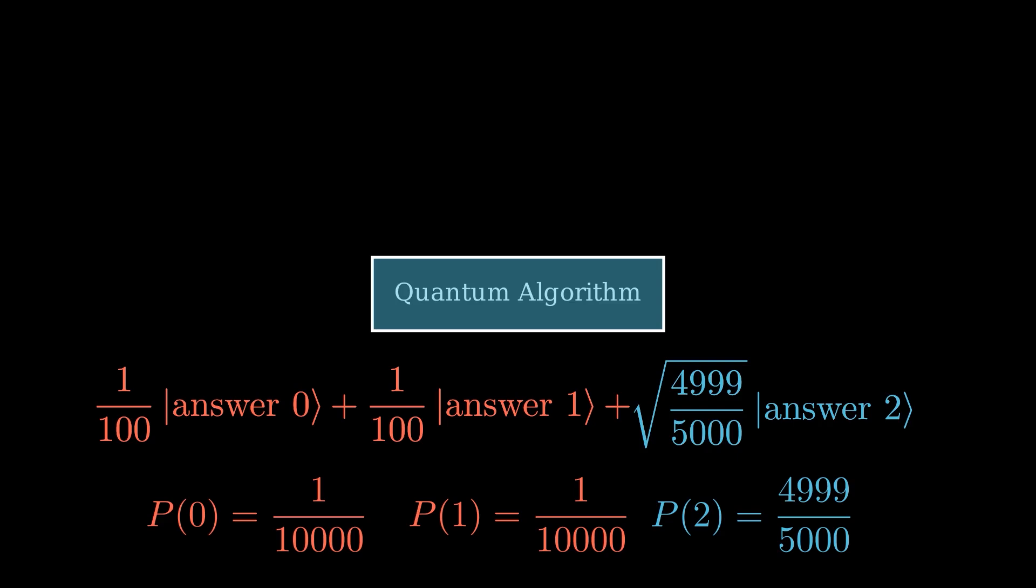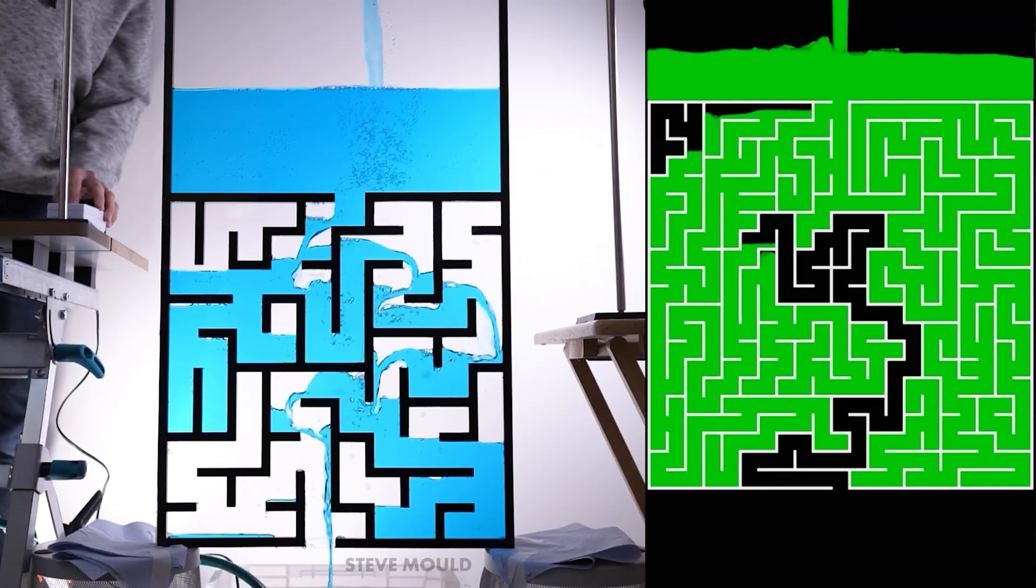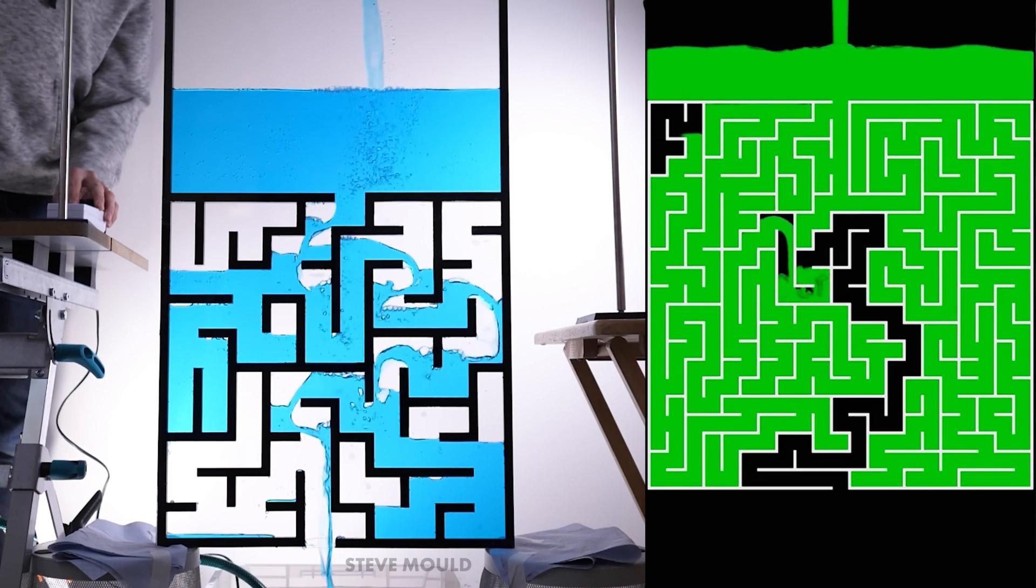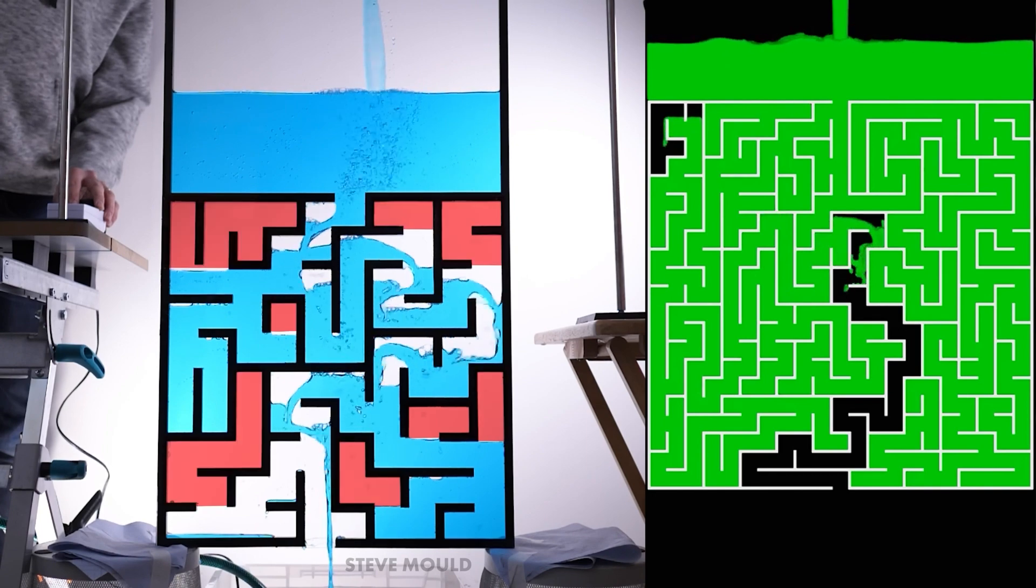Before I do that though, here's a snag. Remember I mentioned the water analogy isn't flawless? Well, here's why. In the water analogy, water explores all the paths, and reliably finds the right one due to physics. The current will always show the right answer to the maze every single time.